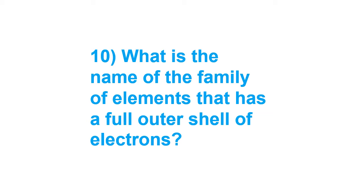Question ten: What is the name of the family of elements that has a full outer shell of electrons? Looking at the electronic configurations of all elements except those in the rightmost group, no atom has eight electrons in its outermost shell or a fully filled configuration. Elements with a fully filled outermost shell of eight electrons are chemically the least reactive, and this is found in Group 18: Helium, Neon, Argon, Krypton, Xenon, and Radon. According to the octet rule, they are chemically least reactive.